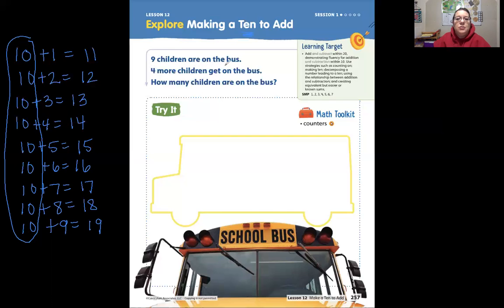It says nine children are on the bus. So there are nine children there. Four more get on the bus. So if nine are there, that has to be a part. So let's label that as a part. So if nine are there and four more get on the bus, that means we're going to put them together. We're going to add those two, right?